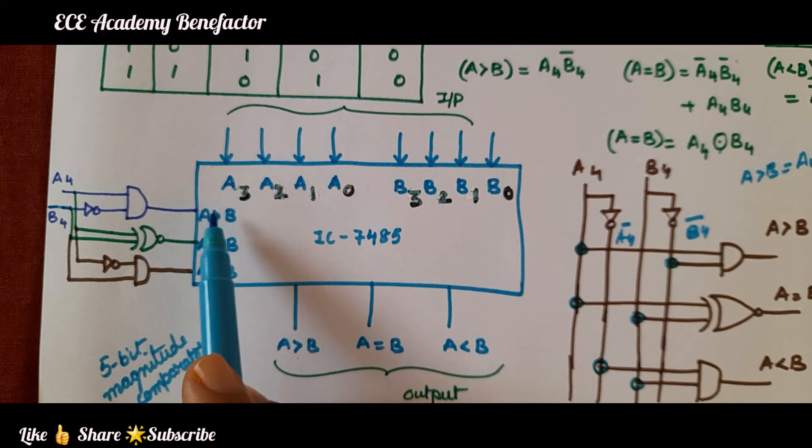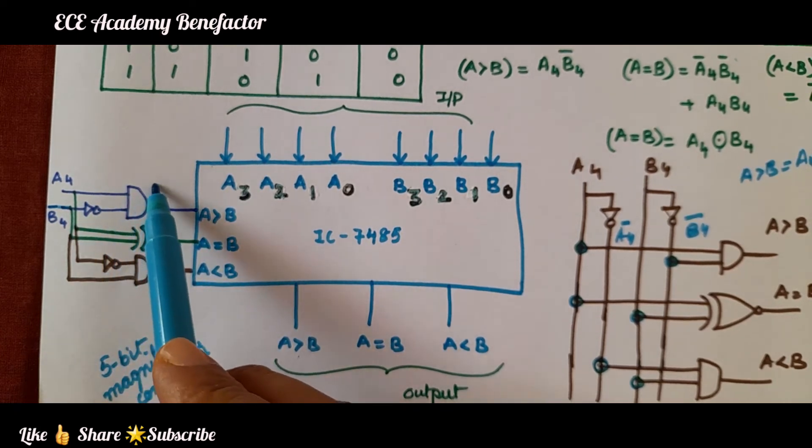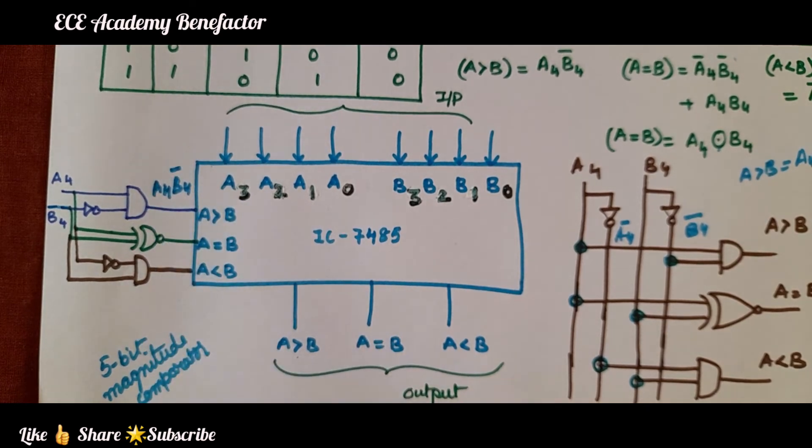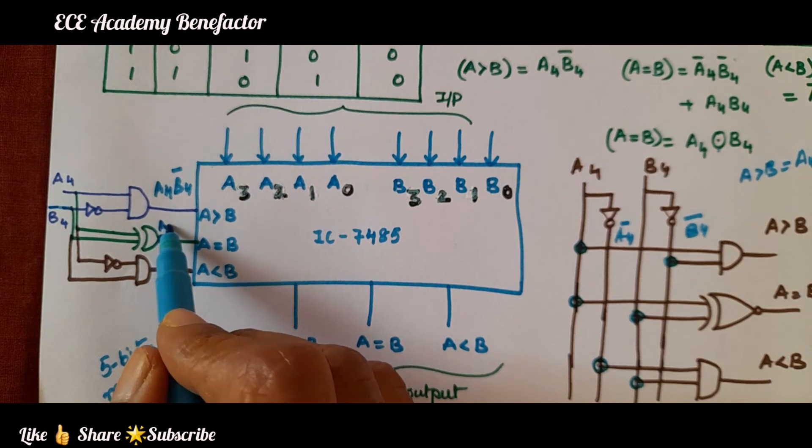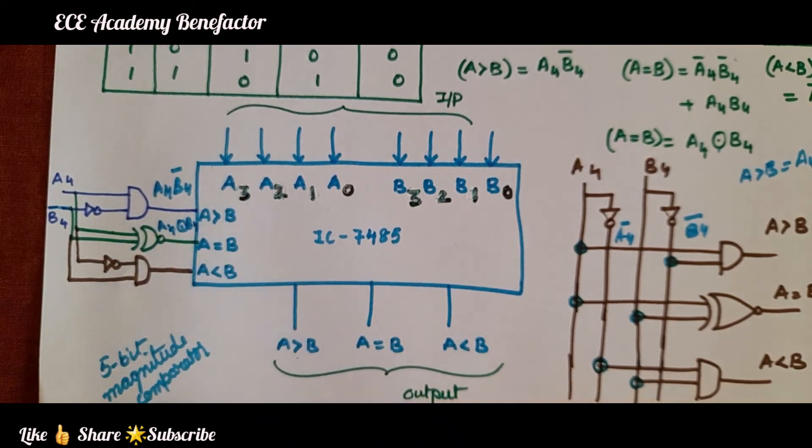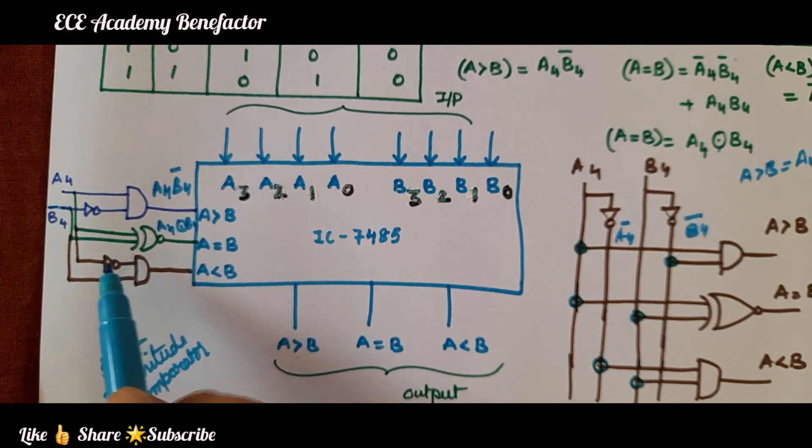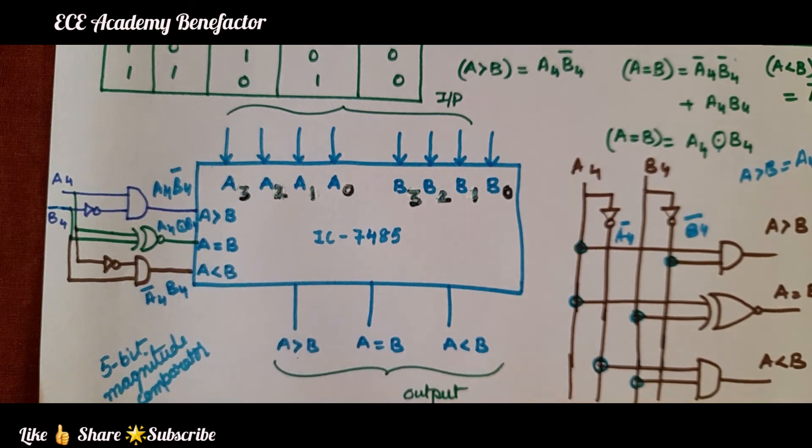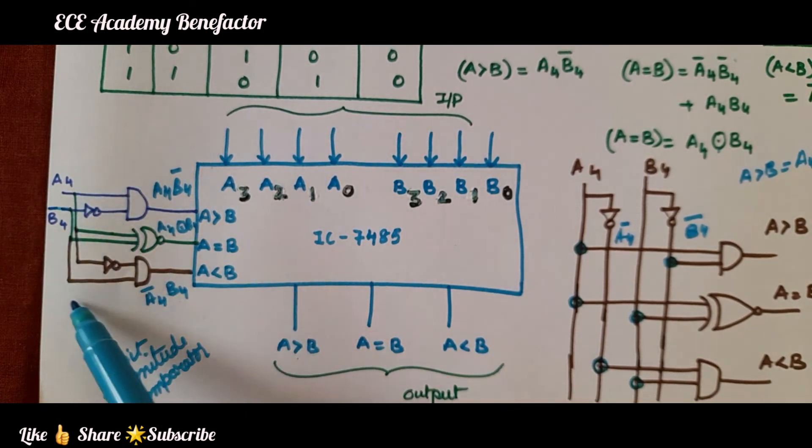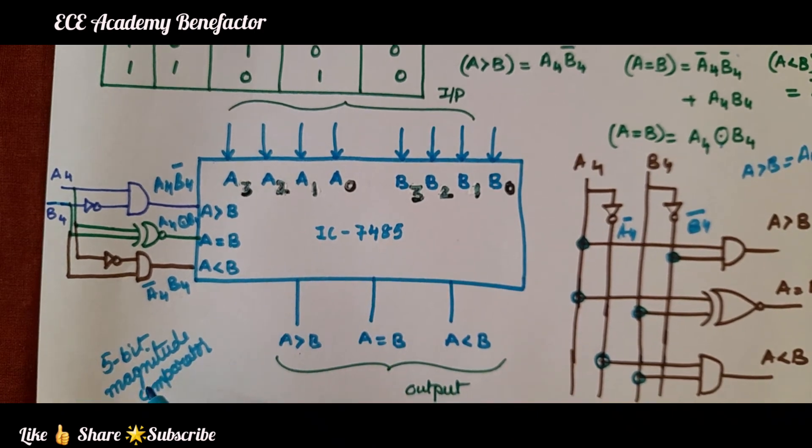Here we are having I, A greater than B, A equal to B. What is the circuit we have to connect here for A greater than B? It is A4, B4 bar. And here it is A4 and B4 given to an XNOR gate. So what it will be coming: A4 XNOR B4. For A less than B, the term is A4 bar, so we will get A4 bar and is connected to B4. We have connected this additional logic circuitry at this point of IC 7485 and designed 5-bit magnitude comparator.